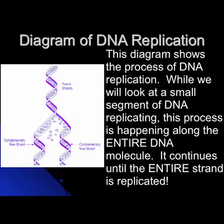If we then brought in little pieces of ladder — nucleotides in this case — and glued them back into place on both of the half ladders, eventually all the rungs would be done and matched up and we would have two identical ladders. That's an analogy for what goes on with DNA replication, until the whole DNA molecule is copied and replicated.